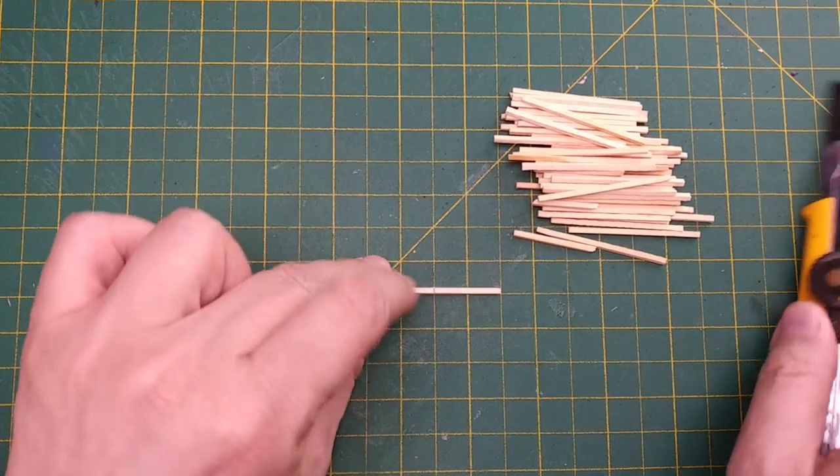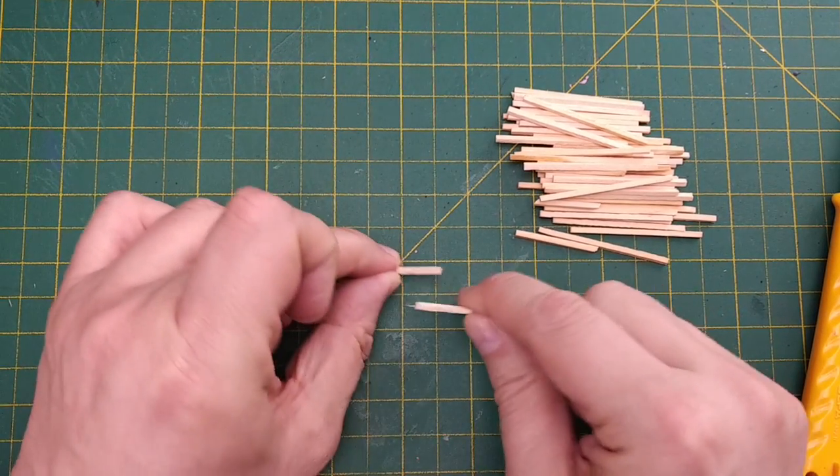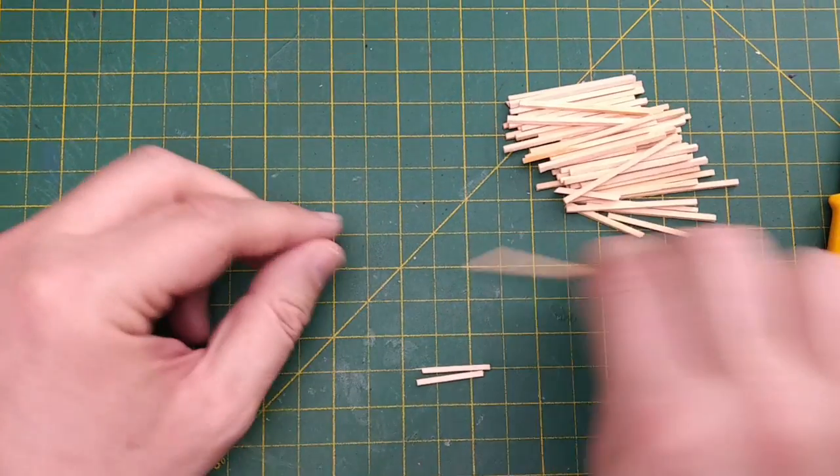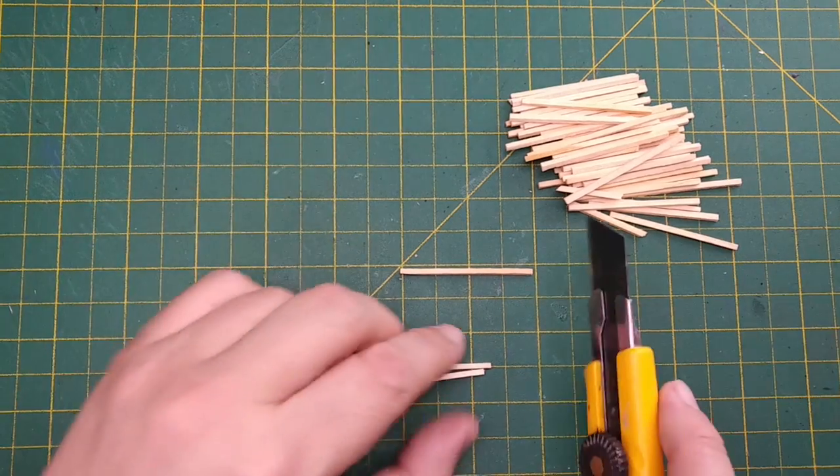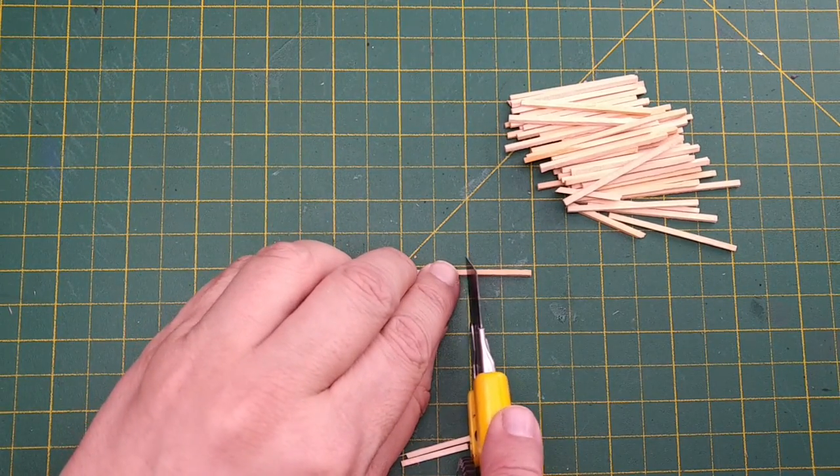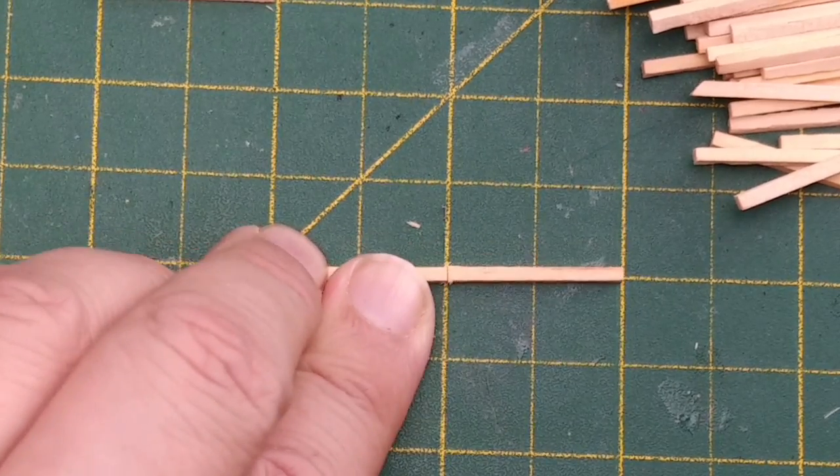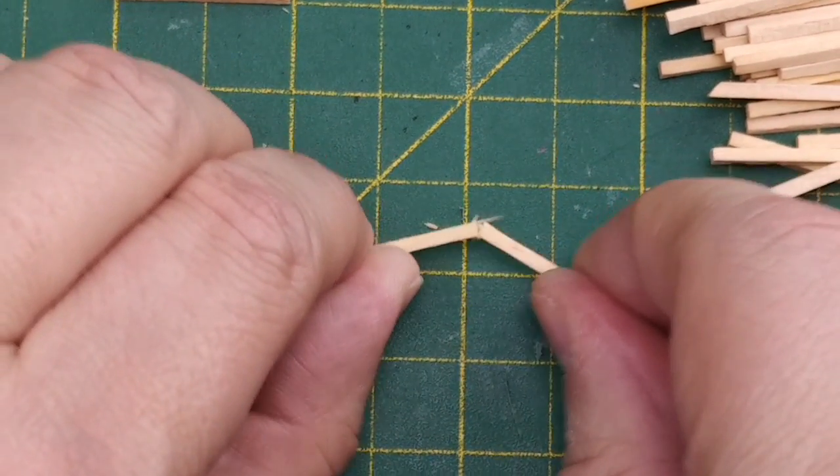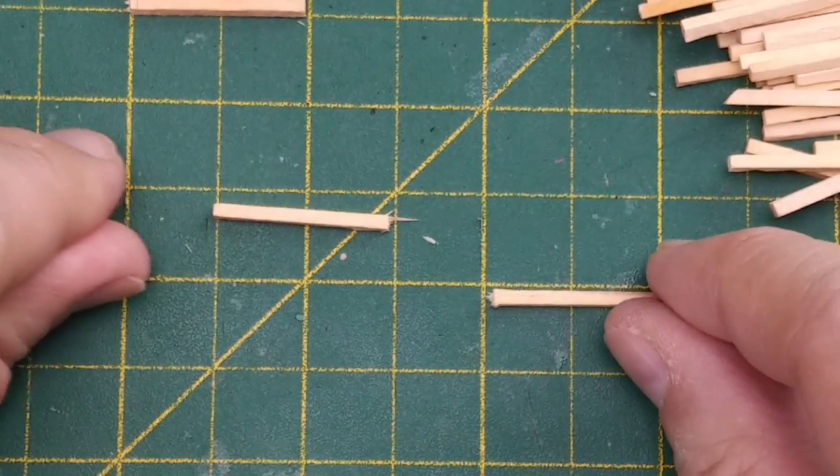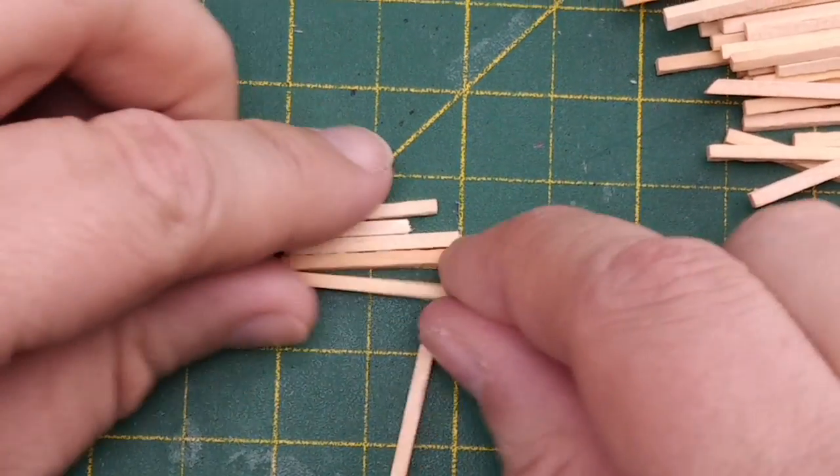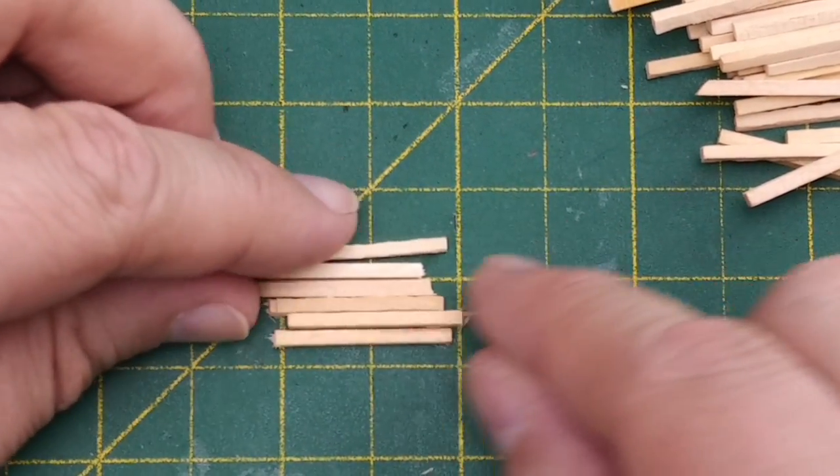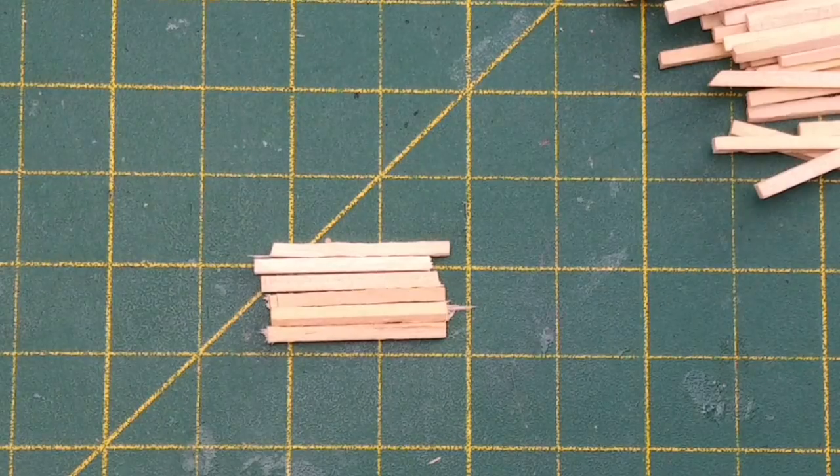To begin we're going to need some fence posts. So we can cut our 2 inch or 5 cm long matchsticks in half. Using a retractable craft knife we're going to cut a number of these matchsticks depending on the design of our split rail fence. For my plan we'll only need 4 one-inch posts for each fence. The cuts don't have to be precise. A rough cut will actually help with the rustic look of the fence posts.